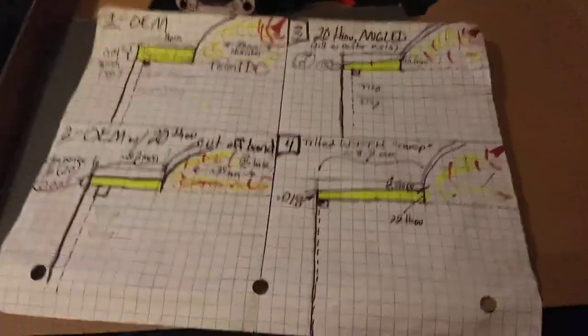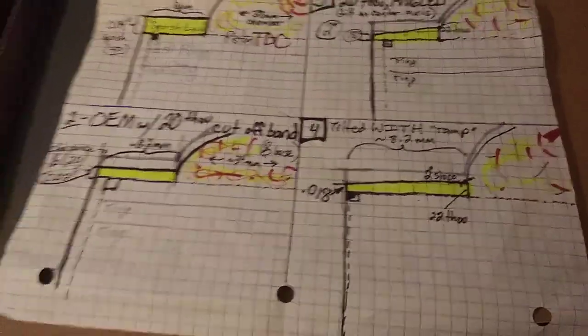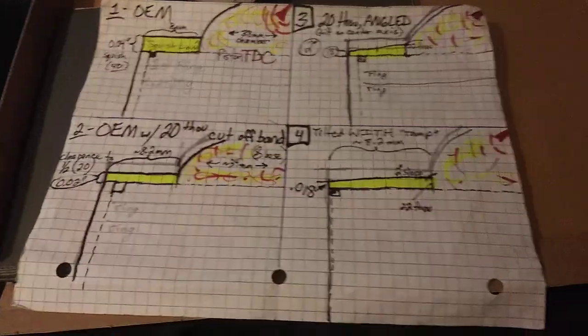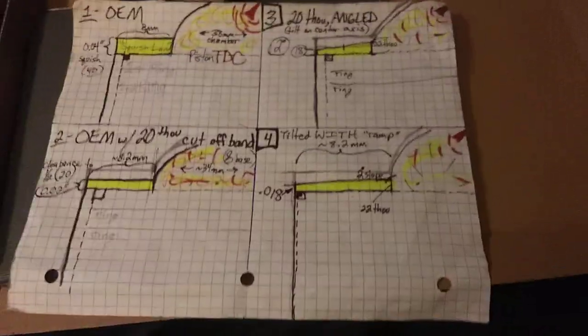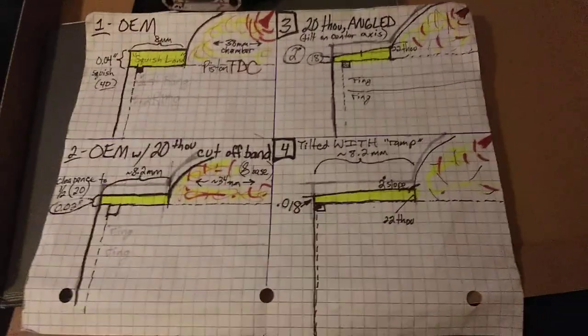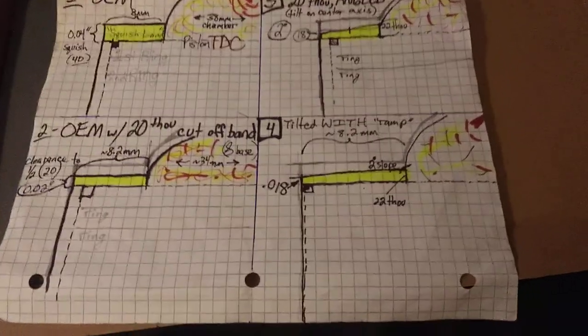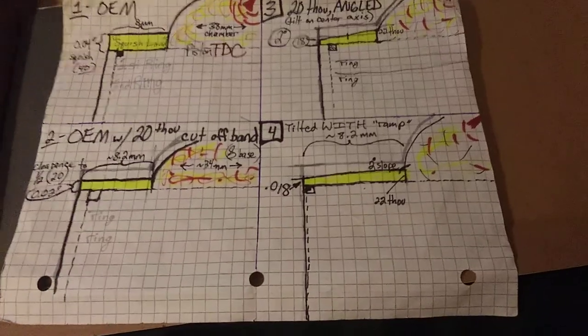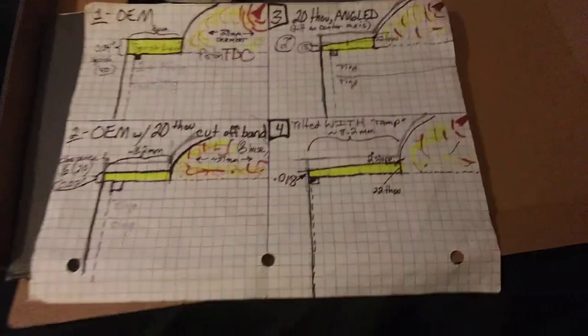That is constantly something that we're looking at, is whether we're chasing diminishing returns. And in fact, we are often, very often. And that's why, you know, you want to learn what you're doing. And the next time that you build something, it's built a lot better. It's not like anyone would recommend that you take a top end apart to correct some little thing on your squish band. It's just to understand it better the next time you do it.